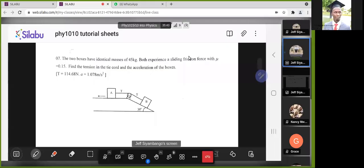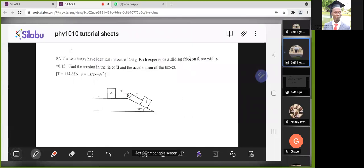Okay, so in this question they're saying that we've got two boxes that have identical masses of 45 kg. Both experience a sliding friction force with coefficient μ = 0.15. Then what they want us to find is the tension in the wire cord and the acceleration of the boxes.